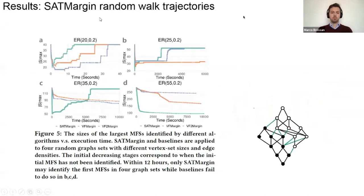Here, the first result: we want to look at the random walk trajectory of SATMargin. Remember, the first step is to go from the top all the way down to the margin subspace and do a random walk. We show our algorithm SATMargin is better than well-known efficient SM based algorithms VF and VF2 in the same random walk mechanism. SATMargin can reduce to the margin space and quickly sample random walk the margin space and identify the largest MFS. The baselines have lower efficiency and sometimes they cannot identify the first MFS in the margin space.